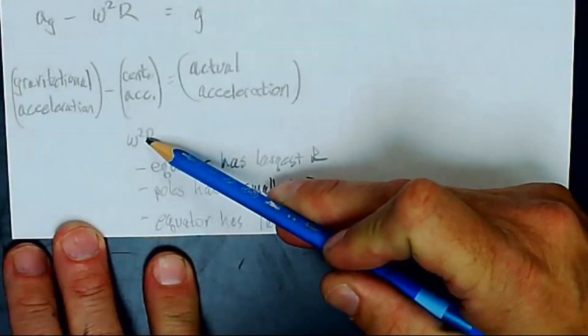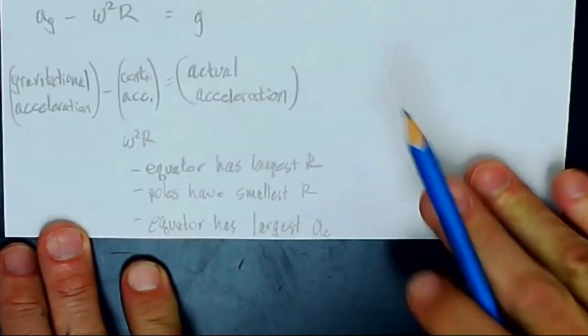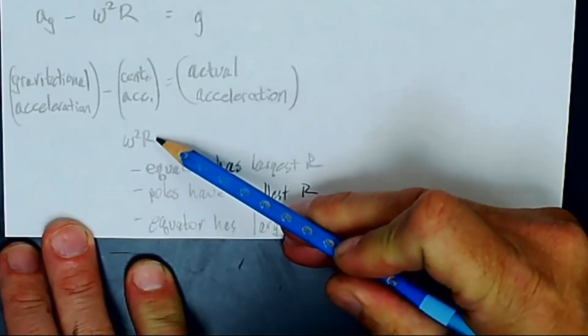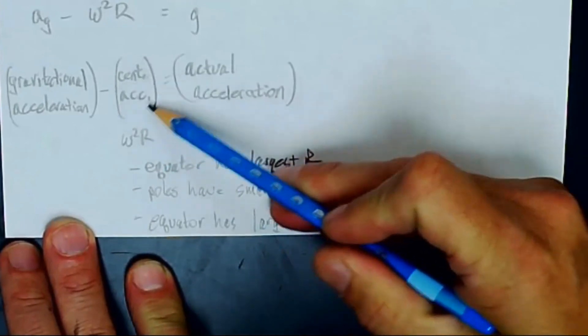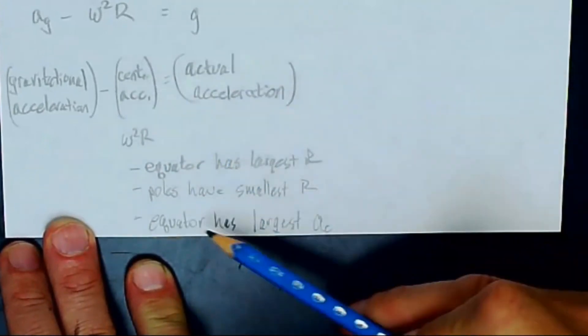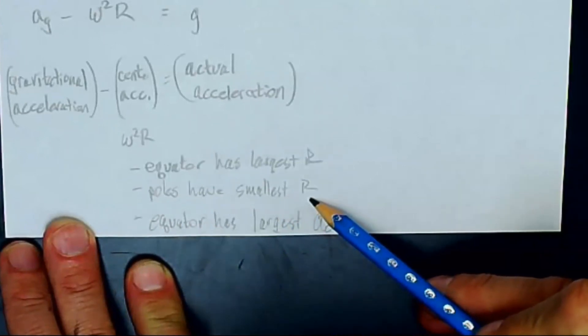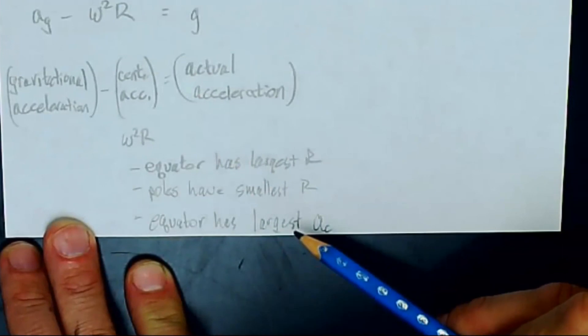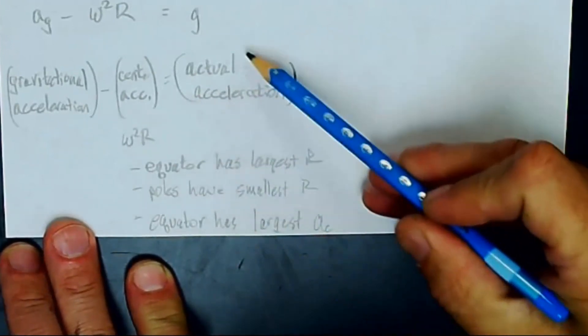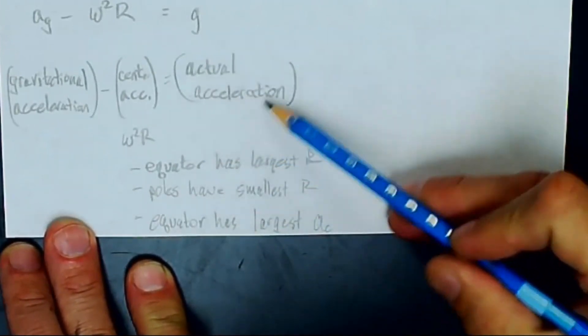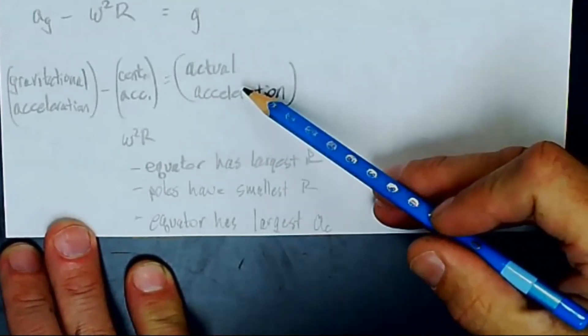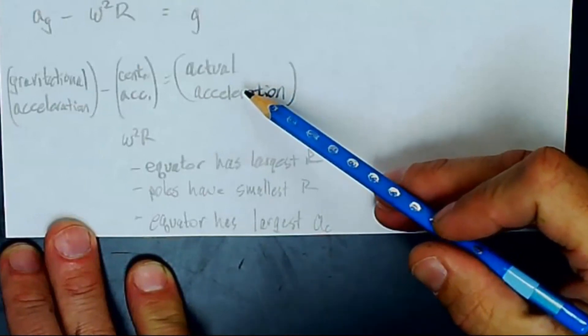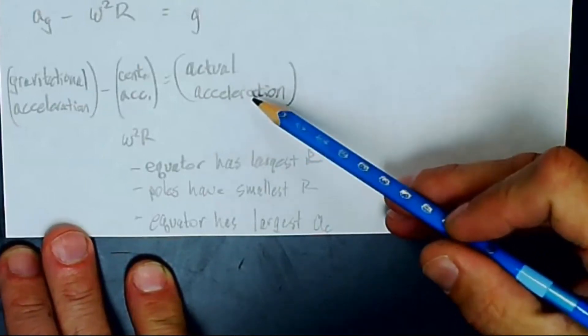And remember, our centripetal acceleration is omega squared times r. So that means when we're at the equator, we have the largest r. So this centripetal acceleration term is the biggest. The poles have the smallest r. That would be 0 at the pole. So this number is 0. So that means at the equator, we're going to have the lowest measured acceleration, and at the poles, we're going to have the greatest measured acceleration when we analyze just the rotation of the Earth.